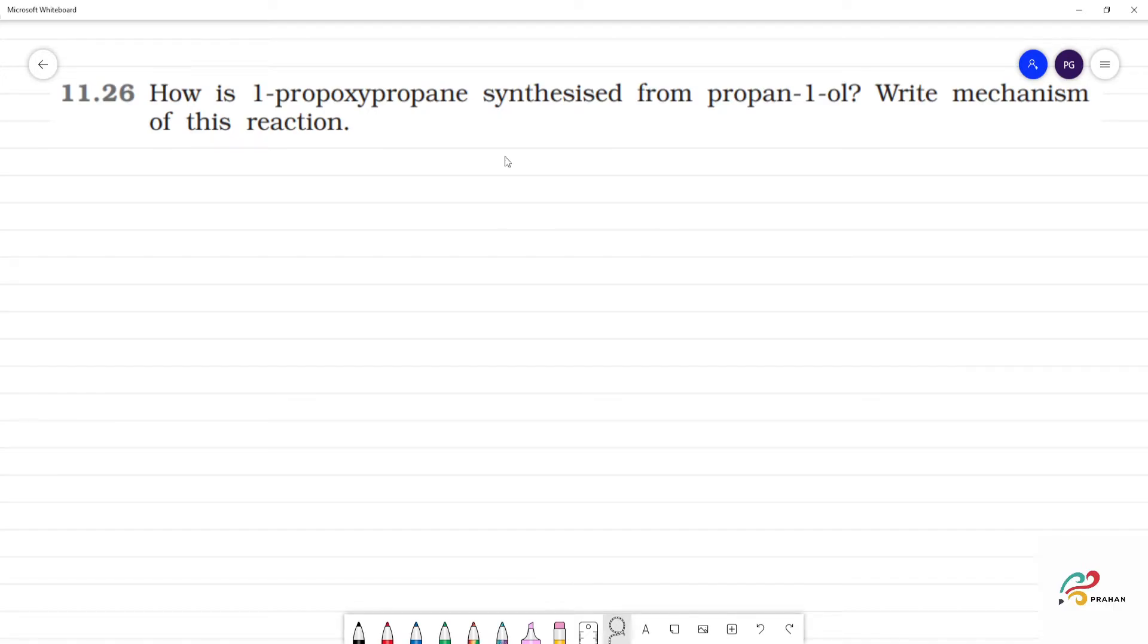How is 1-propoxypropane synthesized from propan-1-ol? Propan-1-ol, we call it CH3-CH2-CH2-OH. This is propan-1-ol.